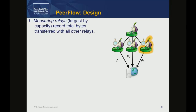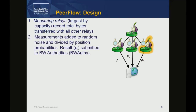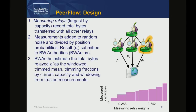In PeerFlow, a set of measuring relays — roughly three-fourths of the largest relays in the network — count how many bytes they exchange with all other relays. Rather than measuring speed (which was always vague), we count bytes sent or received. Once observed long enough, each measuring relay adds differentially private random noise for privacy reasons, then divides by its position weight to extrapolate what the measured relay sent across the entire network. These estimates, denoted rho, are sent to bandwidth authorities.